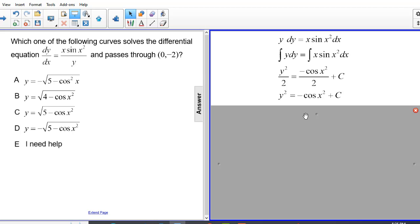Step 3. If given an initial condition, substitute and solve for c. And we actually were given a condition that the curve has to pass through the point (0, -2). So I'm going to use that information to solve for c.